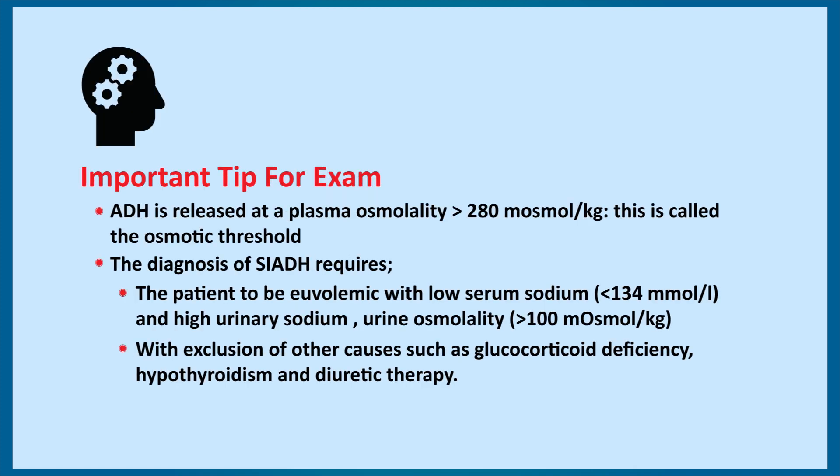Now a very important tip for your exams — this has been asked multiple times. ADH is released at a plasma osmolality threshold of 280 mOsm per kg; this is called the osmotic threshold, after which ADH would be released. For the diagnosis of SIADH, you need the patient to be euvolemic with a low serum sodium less than 134 mmol per liter, and high urinary sodium causing increased urine osmolality of more than 100 mOsm per kg. You must also exclude other causes such as glucocorticoid deficiency, hypothyroidism, and diuretic therapy.